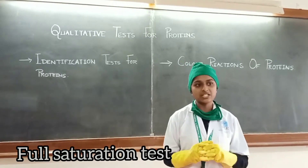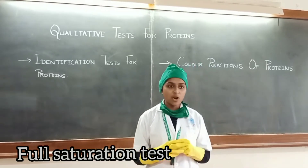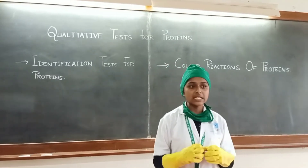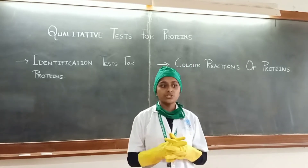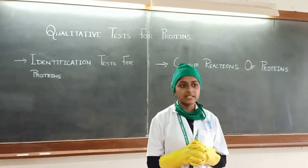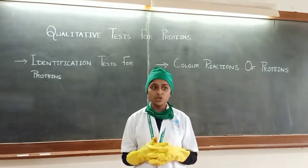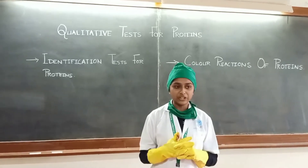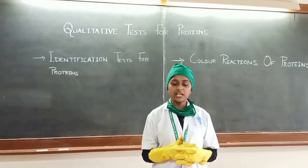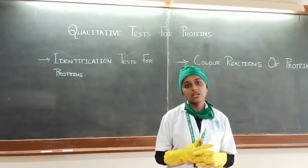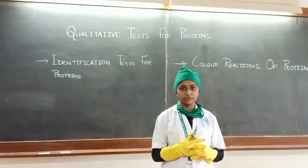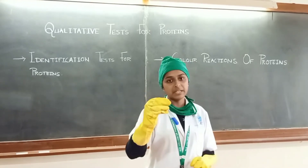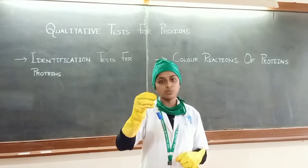Full saturation test: add solid ammonium sulfate to the sample until the solution is saturated, allow to stand for 5 minutes, then filter the solution and perform the biuret test for the filtrate using equal volume of NaOH plus CuSO4. By performing it, blue color appears, indicating the presence of globulin.